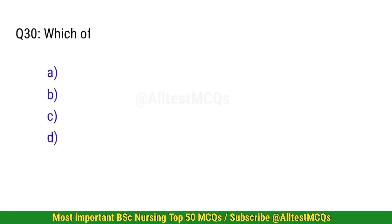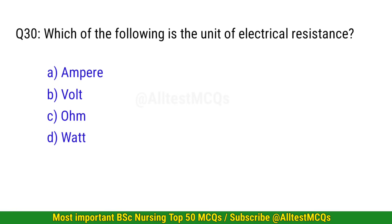Question 30. Which of the following is the unit of electrical resistance? The correct option is C: Ohms.